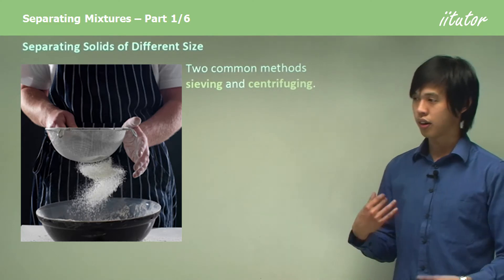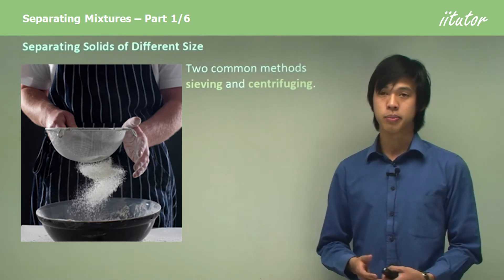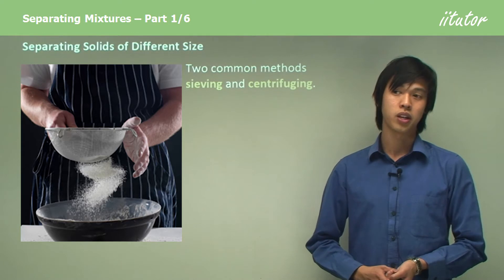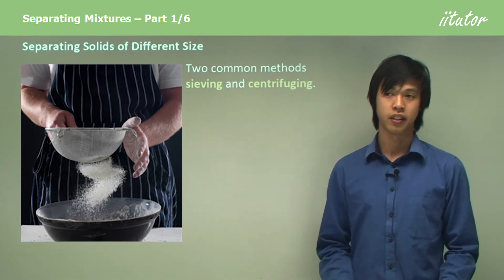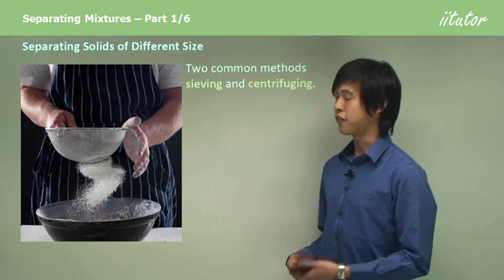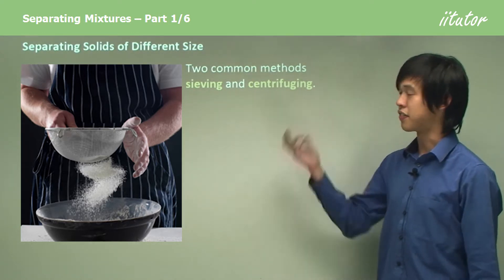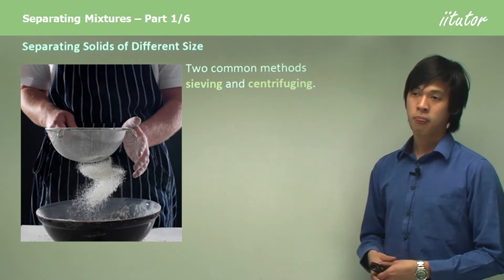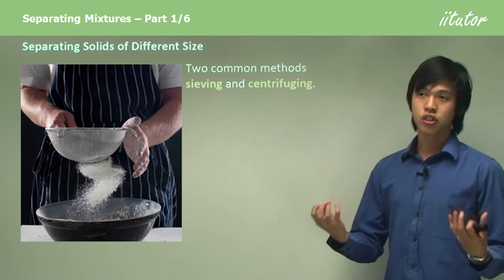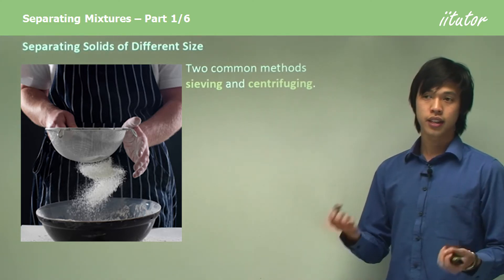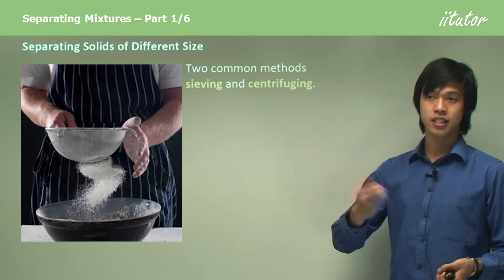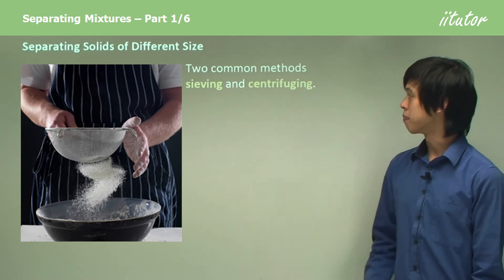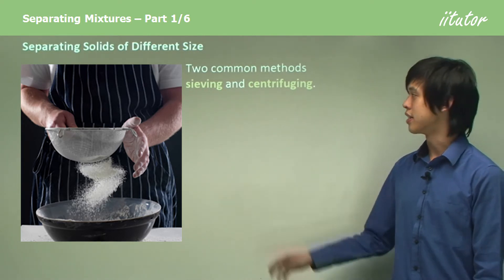So we're going to talk about separation in terms of scenarios where we want to separate two different things. The first scenario is separating solids of different size — where we have two solids that differ in grain size and want to separate them. Two common methods for this are sieving and centrifuging.